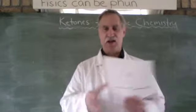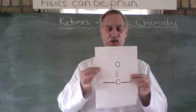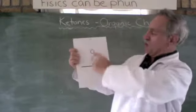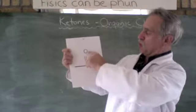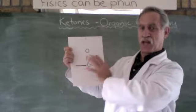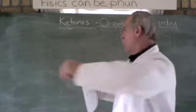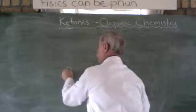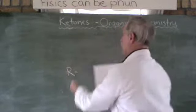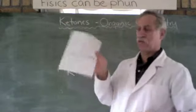I have dealt with, in another video, the aldehydes, which all ended with carbon double bond oxygen hydrogen. So those were the aldehydes where we have a chain of hydrocarbons, often referred to as R, ending with COH.